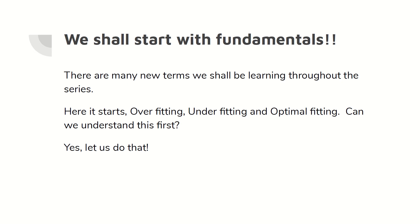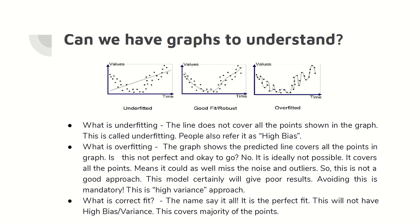We shall start with the fundamentals, and all these are very important for you to understand the deep learning concepts better. We will start with overfitting, underfitting, and optimal fitting. The first picture on the left-hand side is called underfitting. The line does not cover all the points shown in the graph — the line is here and it doesn't cover all the points. There are many points left out. So this is called high bias, and this is called underfitting.